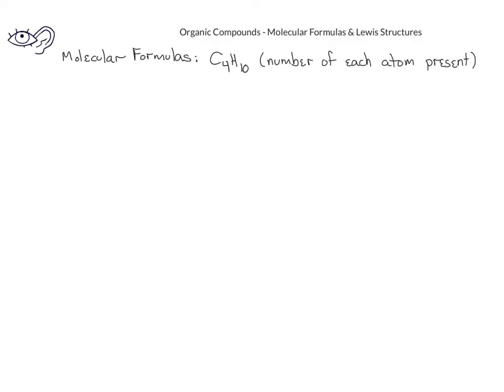In a later video, we'll learn how to name the different organic structures. However, when we have organic structures, we'll see that the molecular formula is not really enough to tell us everything we need to know. For example, if we drew Lewis structures, or structural formulas, for compounds with a formula C4H10, you could imagine that we could draw two different Lewis structures.